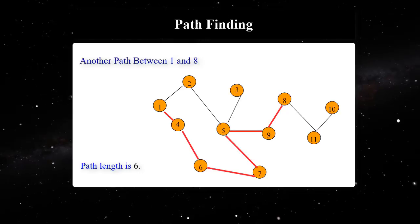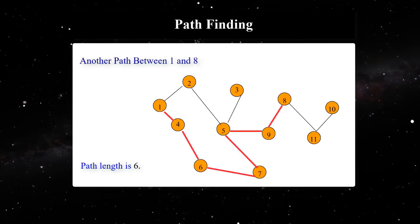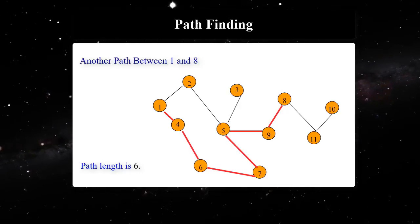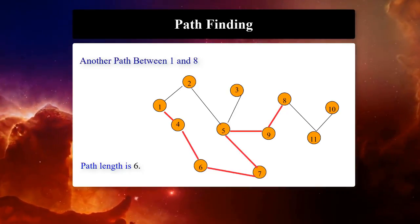And here is another path from 1 to 8 in the same graph. Since the graph may have more than one path between two vertices, we may be interested in finding a path with a particular property. For instance, find a path with minimum length.